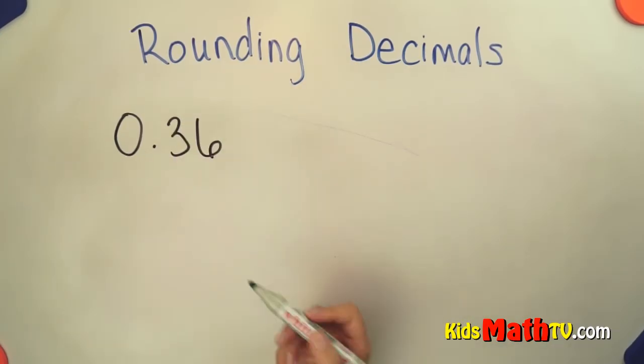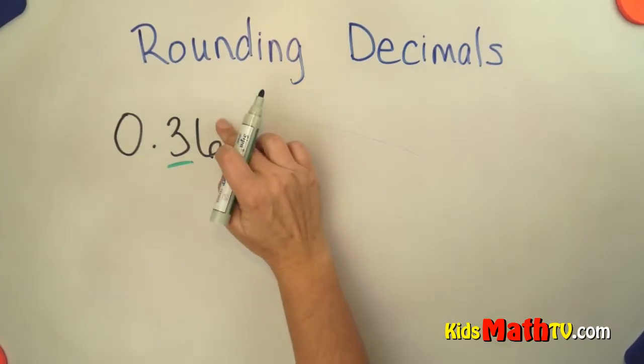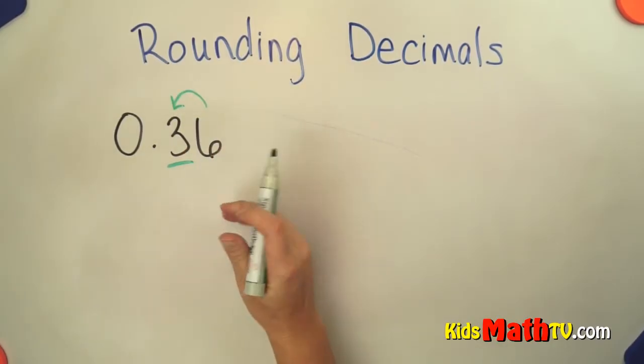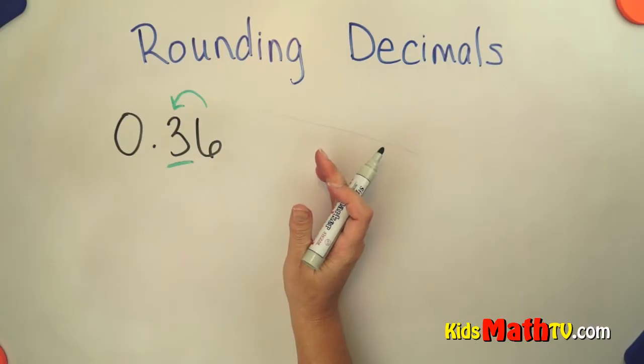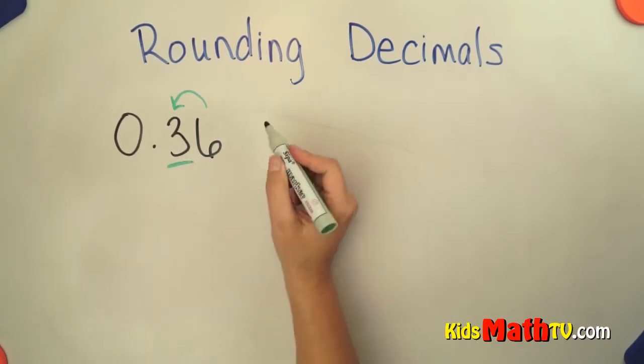and we want to round it to the nearest tenth, we can underline the number in the tenths place. This 6 is going to tell that 3 what to do, whether it's going to stay a 3 or move up to 4 tenths. So it's either 0.3 or 0.4.